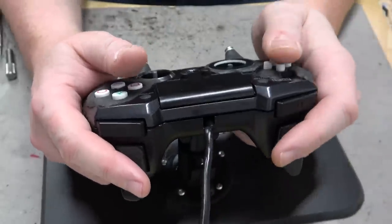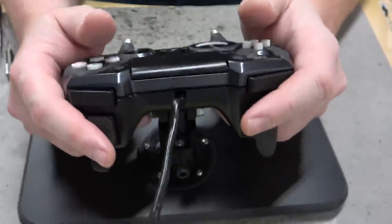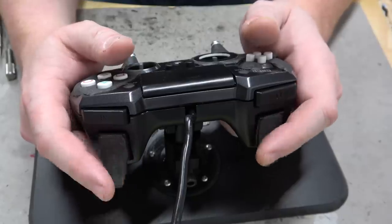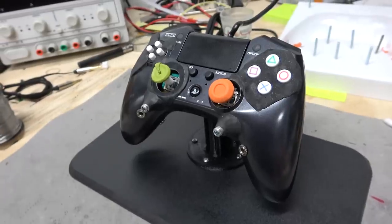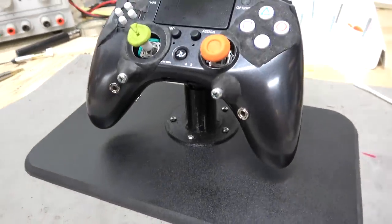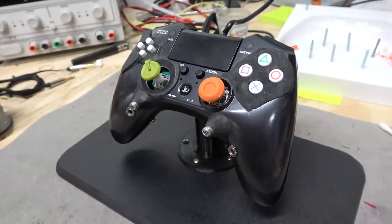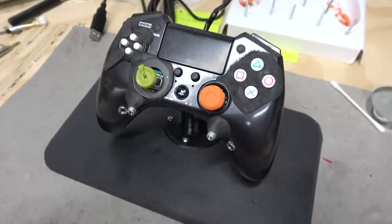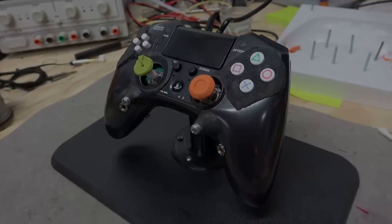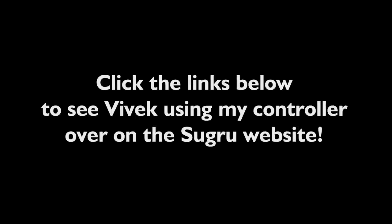So we have our nice base here. Let's put the controller in place. That feels good. Nice, so I'm not actually holding the controller. The controller is just being held in space at the same angle as my hands. Wow, it looks like a museum piece, complete with cool stand. But of course, that stand is there for a reason. Well, looks like it's pretty much done. I think we can send this off to Vivek and see if it helps them play video games. Click the links below in the video description to see Vivek using my controller over on the Sugru website.